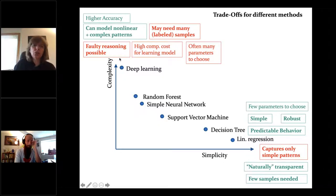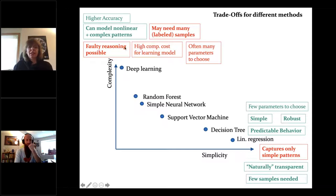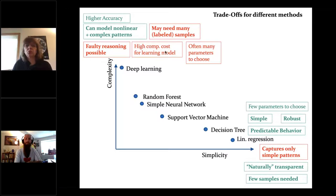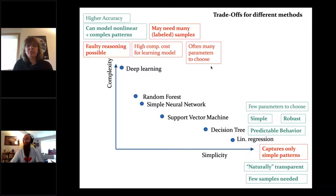At the other extreme, deep learning may give you higher accuracy, especially for nonlinear and complex patterns including spatial patterns. But as we saw, faulty reasoning can happen. There's a much higher computation cost for learning the model, you may need very many labeled samples — which are often hard to come by, since we don't have that many hurricanes — and there are very many parameters to choose.